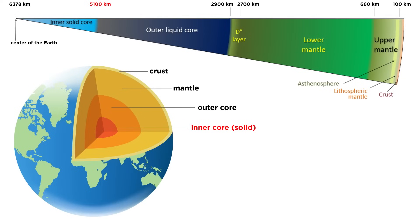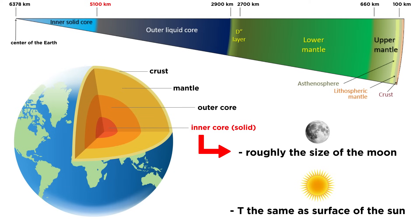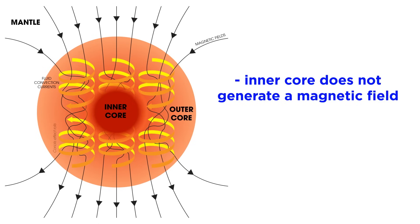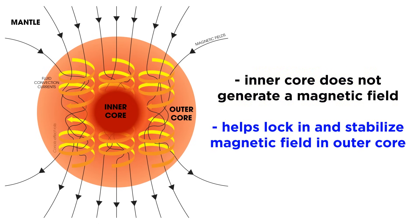At 5,100 kilometers, the pressure becomes so great that iron is forced into the solid phase. This boundary is called the Bullen discontinuity, and it marks the division between the liquid outer core and the dense, solid inner core. The inner core is about the size of the Moon and has a temperature equivalent to the surface of the Sun. Though the inner core does not generate a magnetic field, it does help lock in the field lines and stabilize the magnetic field generated in the outer core.